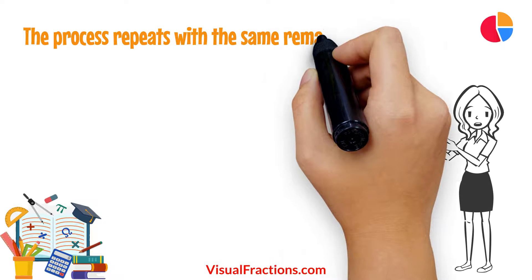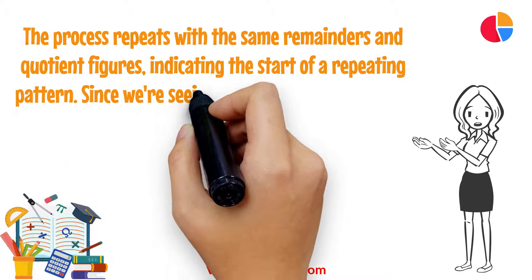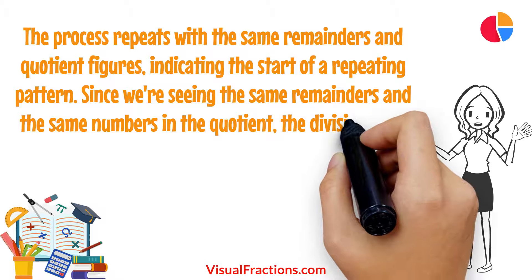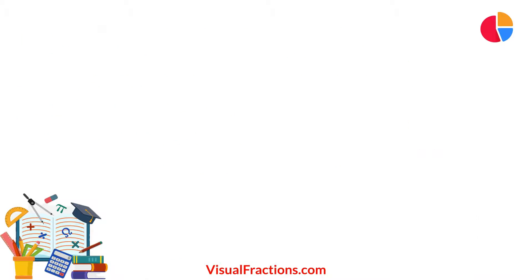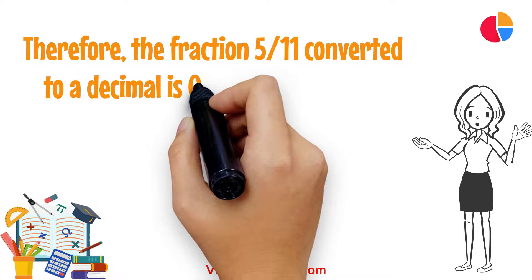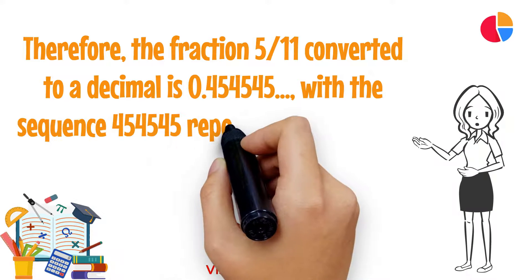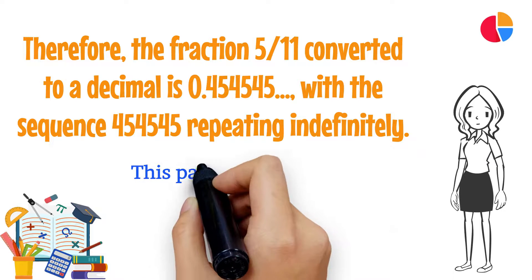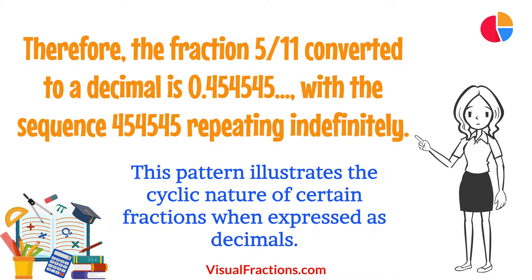The process repeats with the same remainders and quotient figures, indicating the start of a repeating pattern. Since we're seeing the same remainders and the same numbers in the quotient, the division cycle will continue indefinitely, producing a repeating decimal. Therefore, the fraction 5 elevenths converted to a decimal is 0.454545, with the sequence 45 repeating indefinitely. This pattern illustrates the cyclic nature of certain fractions when expressed as decimals.